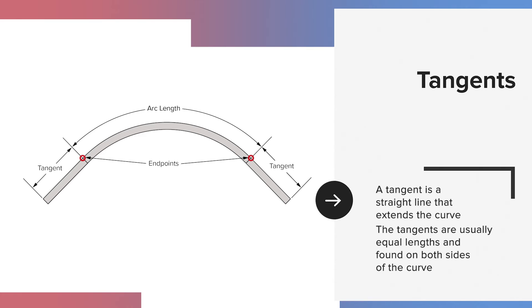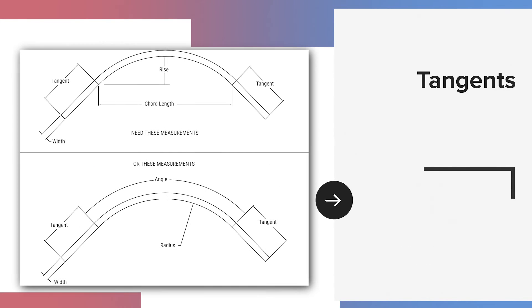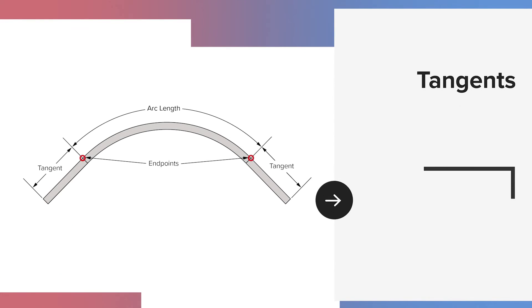The tangents are usually equal lengths and found on both ends of the curve. It's possible for the tangent to be on one side of the track only, but this is rare. Measuring curves with tangents can seem tricky, but it's not. You must know the endpoints of the curve to take measurements necessary for an accurate result. Tangents are measured after all the curve measurements have been taken, so you'll already know where the endpoints are. As we mentioned with arc length, a common error is to include the tangent length in the arc length. This will give an incorrect result.